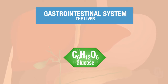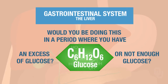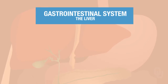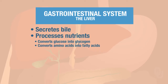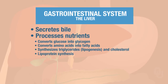Would you be doing this during a period where you had an excess of glucose or not enough glucose? Just a question for you to think about. Now the liver will also take amino acids and convert them to fatty acids. The liver will synthesize triglycerides and cholesterol — remember the synthesis of triglycerides is called lipogenesis — and the liver will also do lipoprotein synthesis.